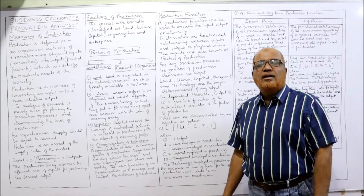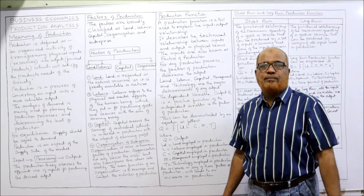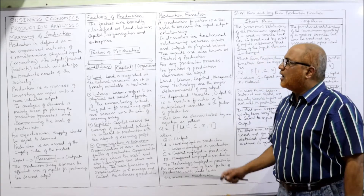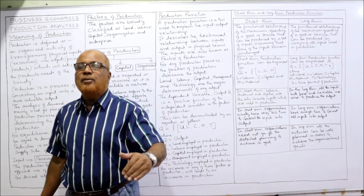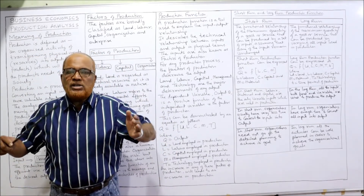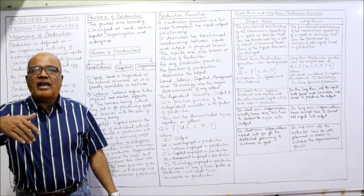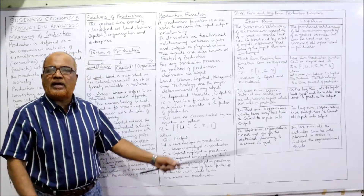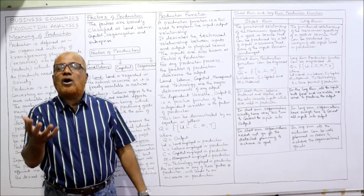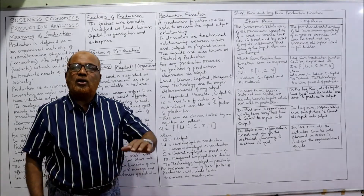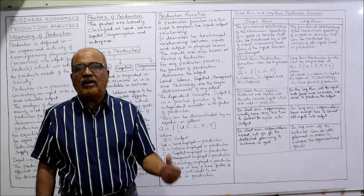The next topic is production function. A production function shows the technical relationship between input and output. It is a tool used to explain the input-output relationship. We use inputs in the form of factors of production to produce output, and the production function describes this technical relationship in physical terms — how many units of input are used to produce how many units of output.